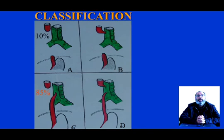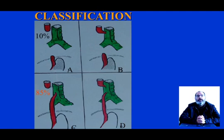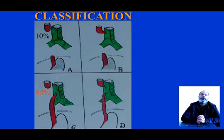In Type B, we have a communication between the upper pouch and the trachea. In Type C, we have communication between the lower pouch of the oesophageal atresia and the trachea, and this is the most common form of oesophageal atresia. In Type D, we have both communication between the upper pouch and the lower pouch with the trachea.